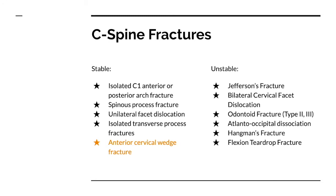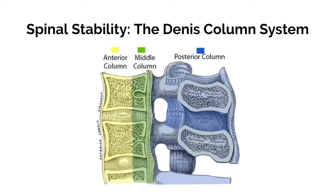What is spinal stability? The definition is verbatim: it's the ability of the spine to limit patterns of displacement under physiological loads so as not to damage or irritate the spinal cord or nerve roots. That makes sense.